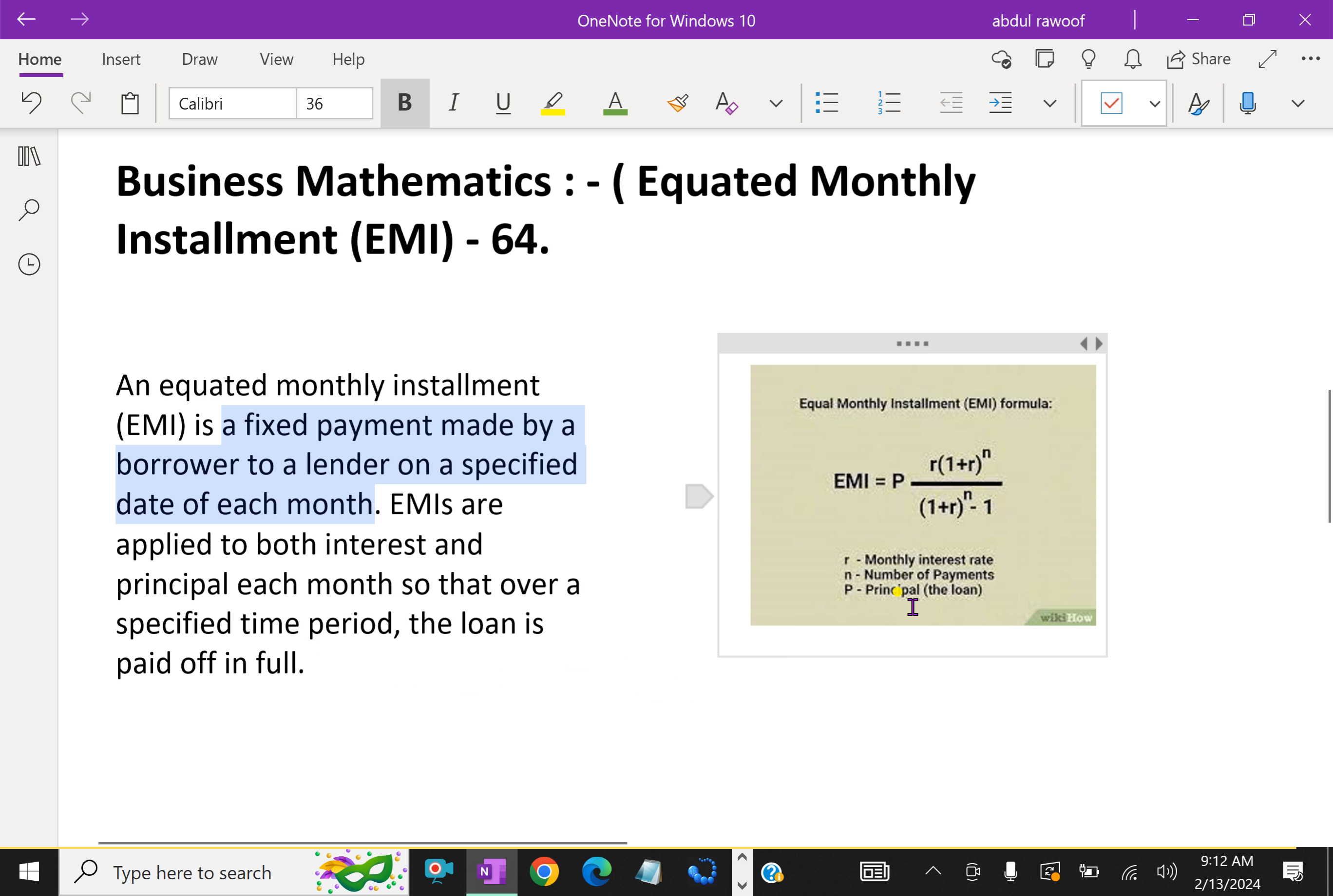This is a formula for EMI calculation. A fixed payment amount made by a borrower to a lender at a specified date each calendar month. Equated monthly installments are used to pay off both interest and principal each month so that over a specified number of years the loan is paid off in full.